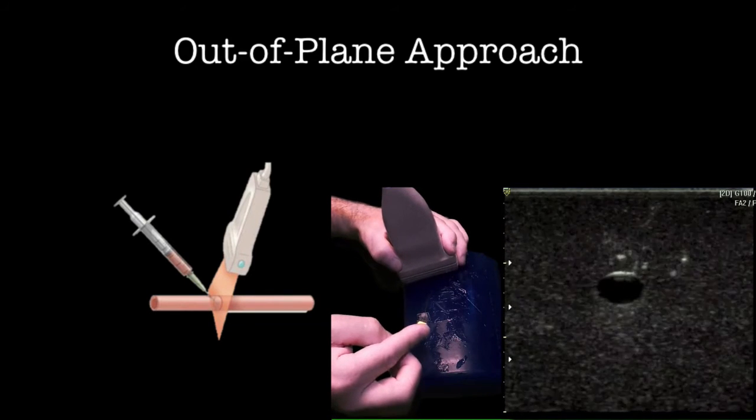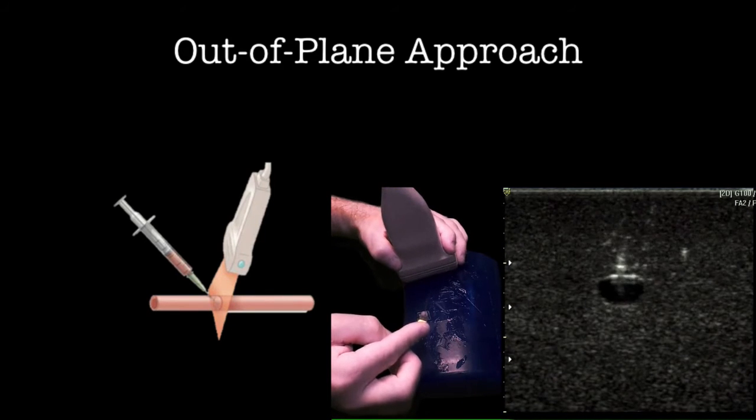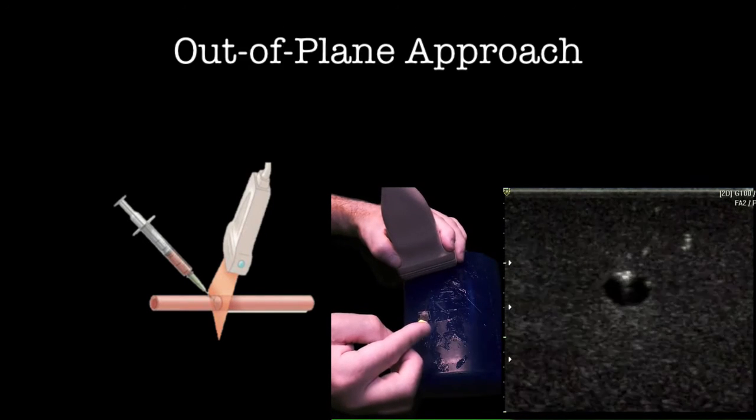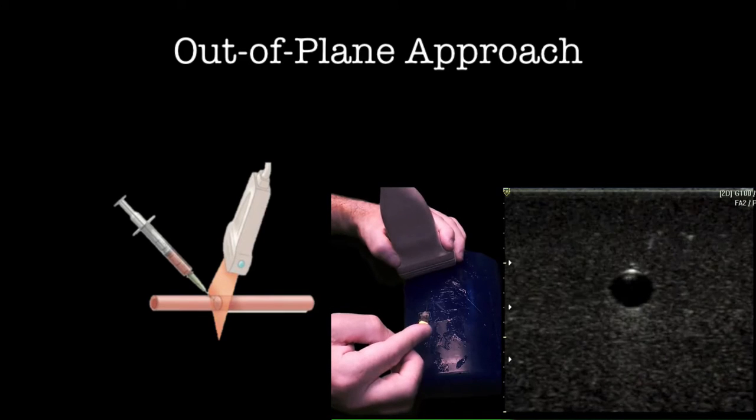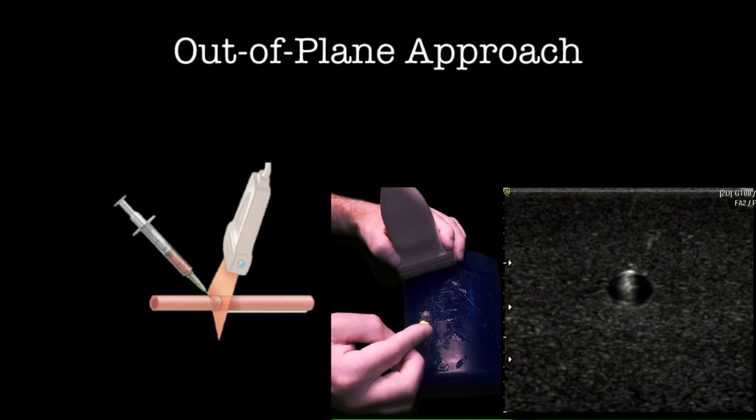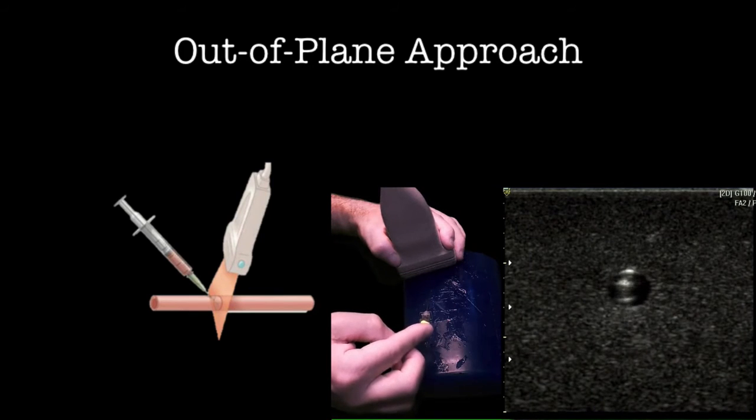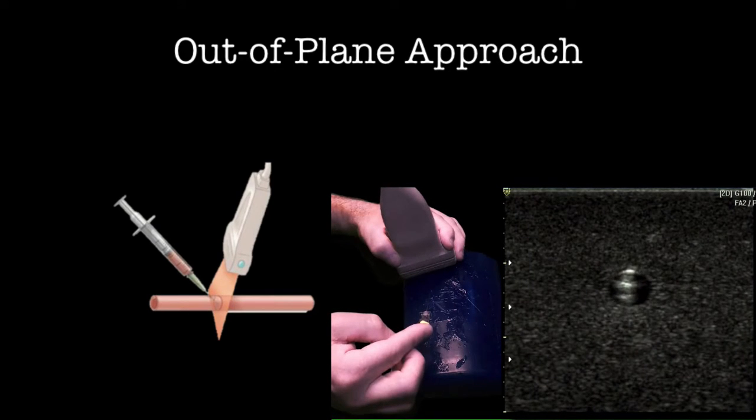Once the needle is seen, stop moving the needle and slide the transducer further up the vein. This process is repeated until the needle is centered in the vein lumen. This is walking the needle towards the vein. The probe is moved up the vein, then the needle slid into view. Probe then needle.